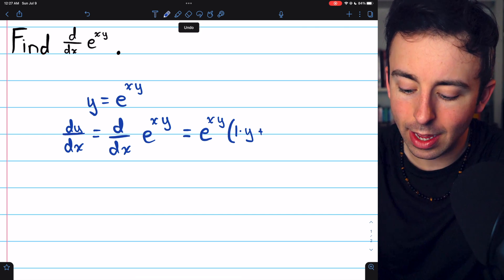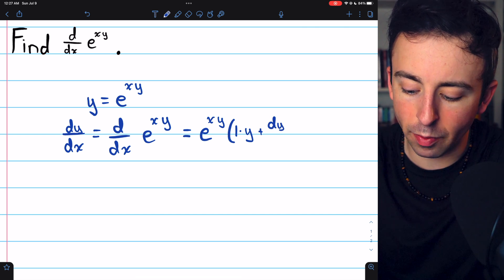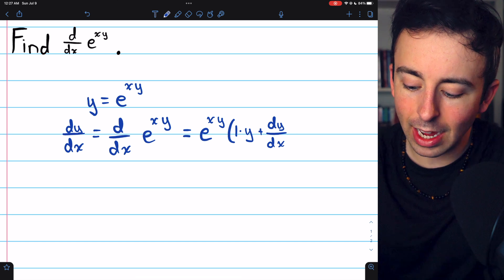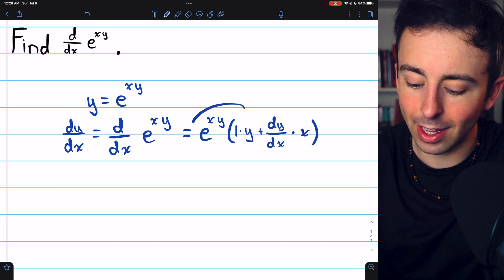g is y. So g prime is just the derivative of y, which is dy dx. And then we multiply that by f, which in this case is x. And there we go.